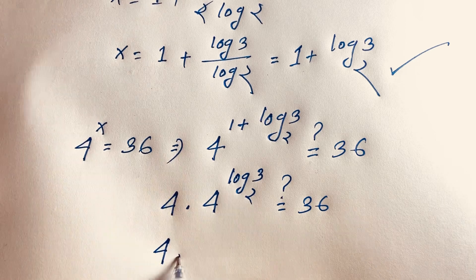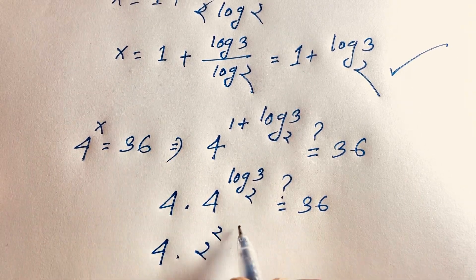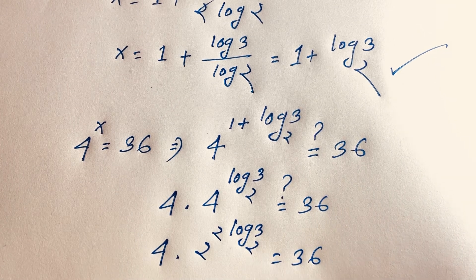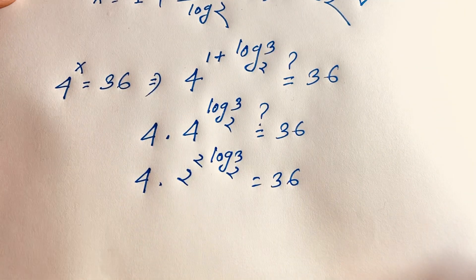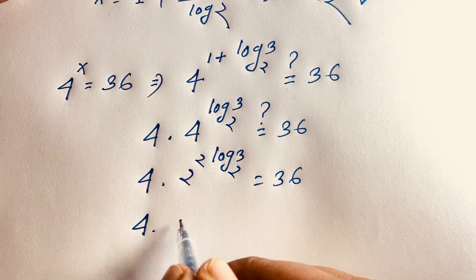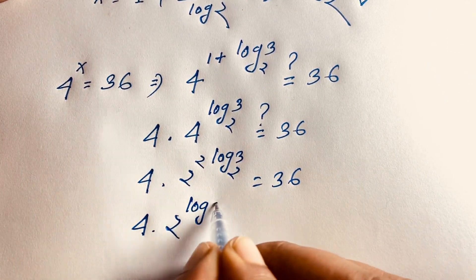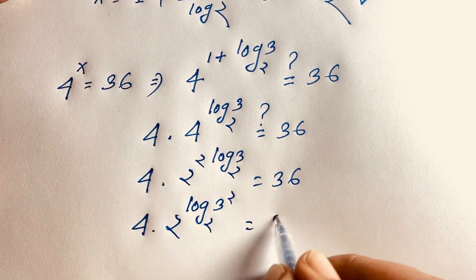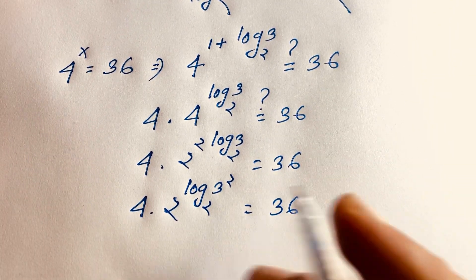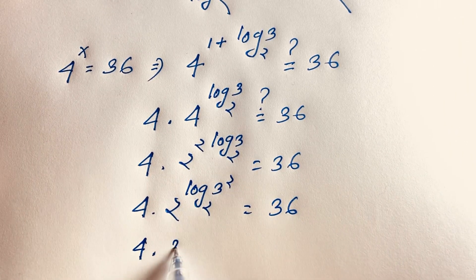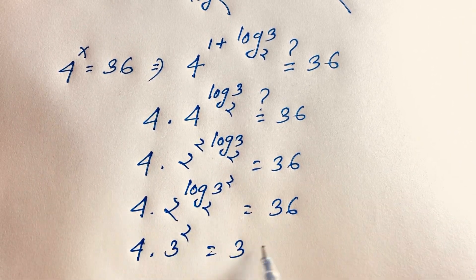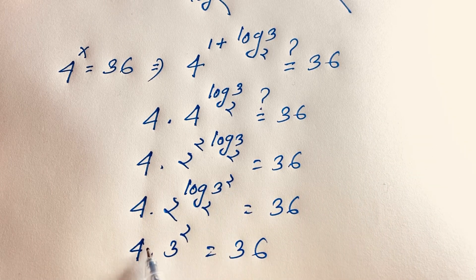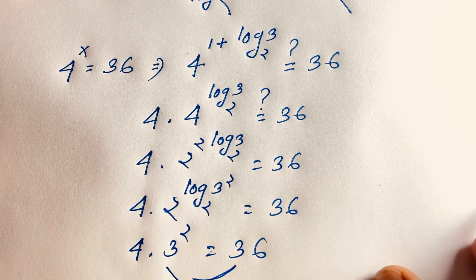Now, 4 times 4 to the power log base 2 of 3. We can rewrite 4 as 2 squared, so this becomes 4 times 2 squared to the power log base 2 of 3. Using logarithm properties, 2 to the power log base 2 of 9 equals 9, so we get 4 times 3 squared equals 4 times 9 equals 36. Left hand side equals right hand side, confirmed.